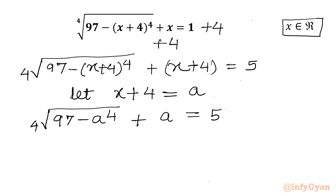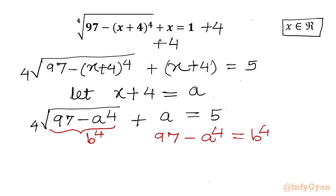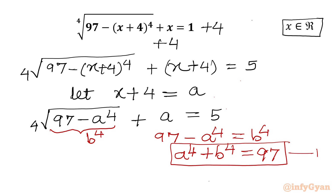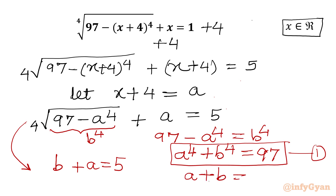Now our second substitution will come. I will consider the radicand equal to B power 4. Let me write: 97 minus A power 4 equal to B power 4. From here I get my first equation: A power 4 plus B power 4 equal to 97 — call this equation 1. And from the radical equation I can write B plus A equal to 5, so our second equation is A plus B equal to 5.